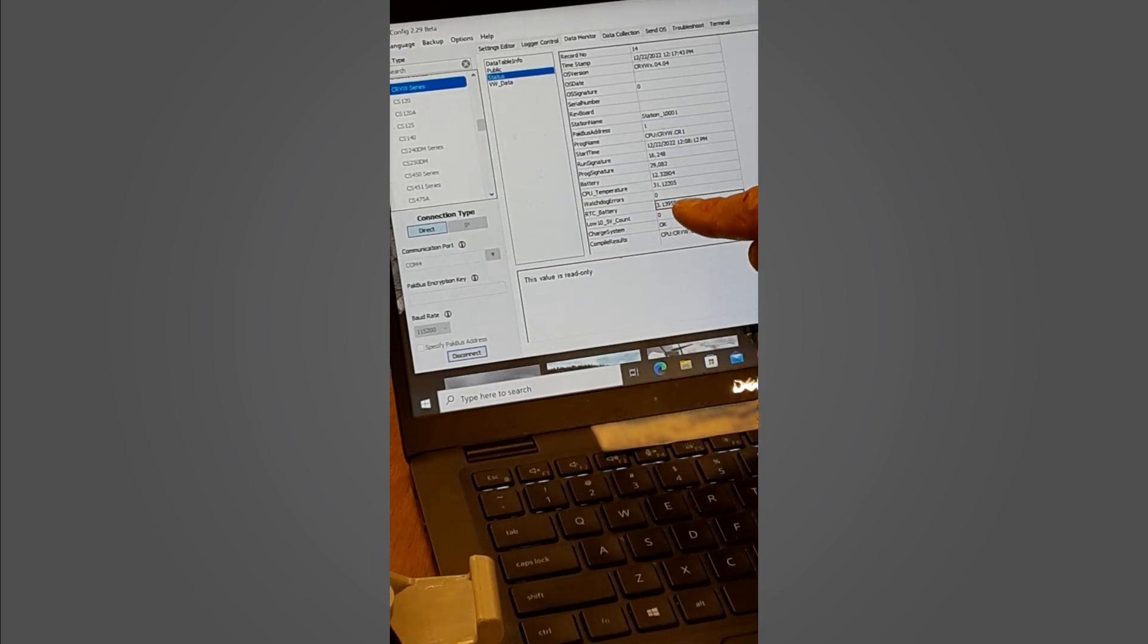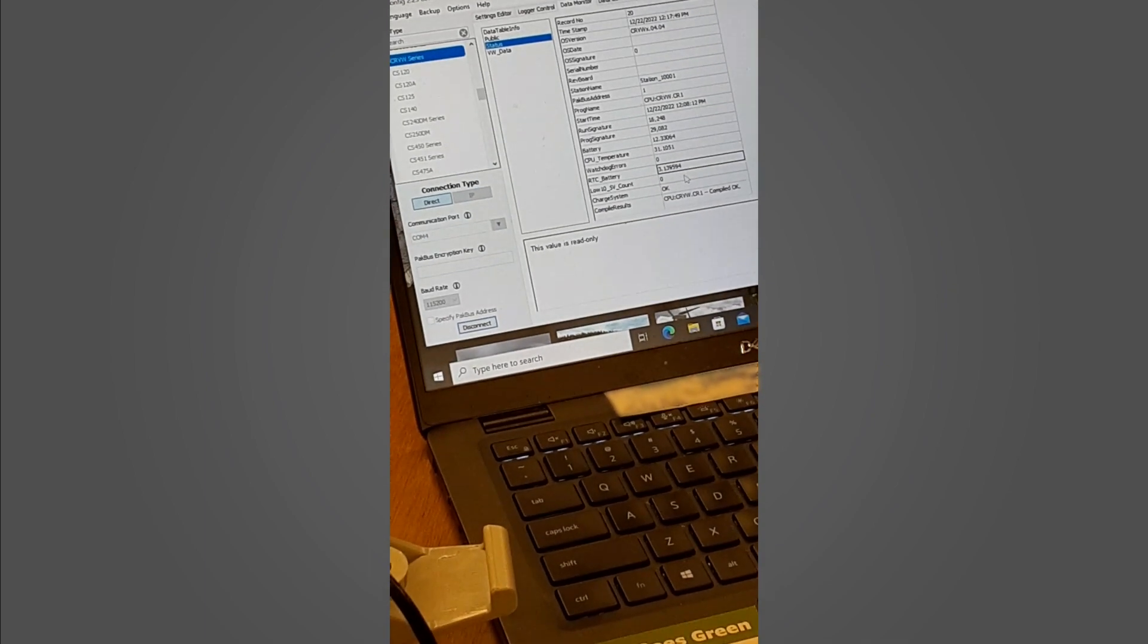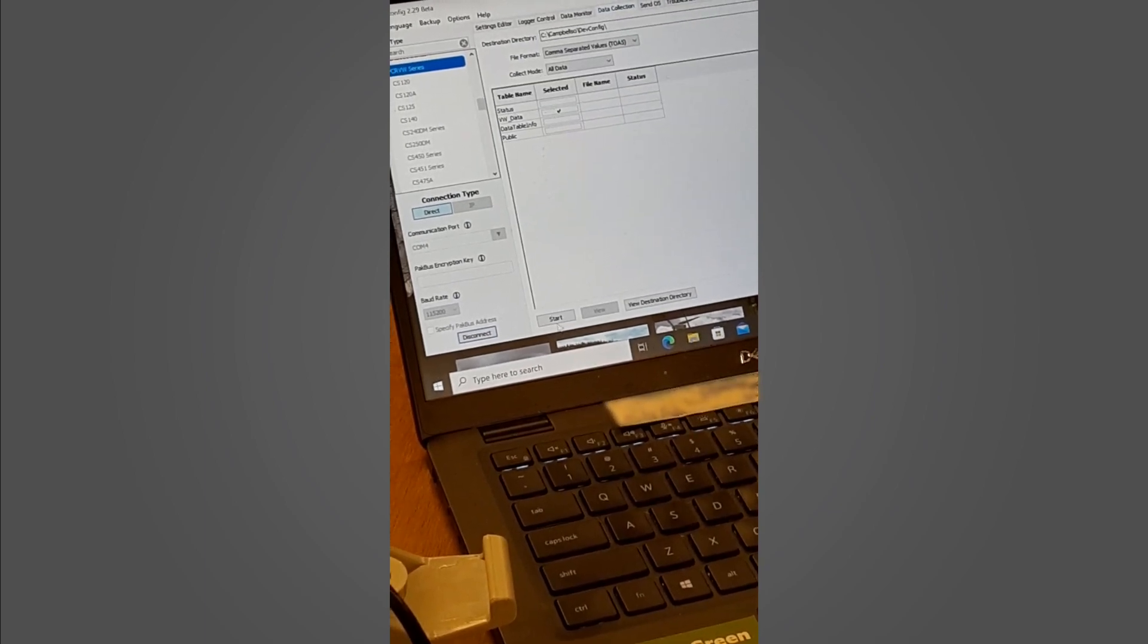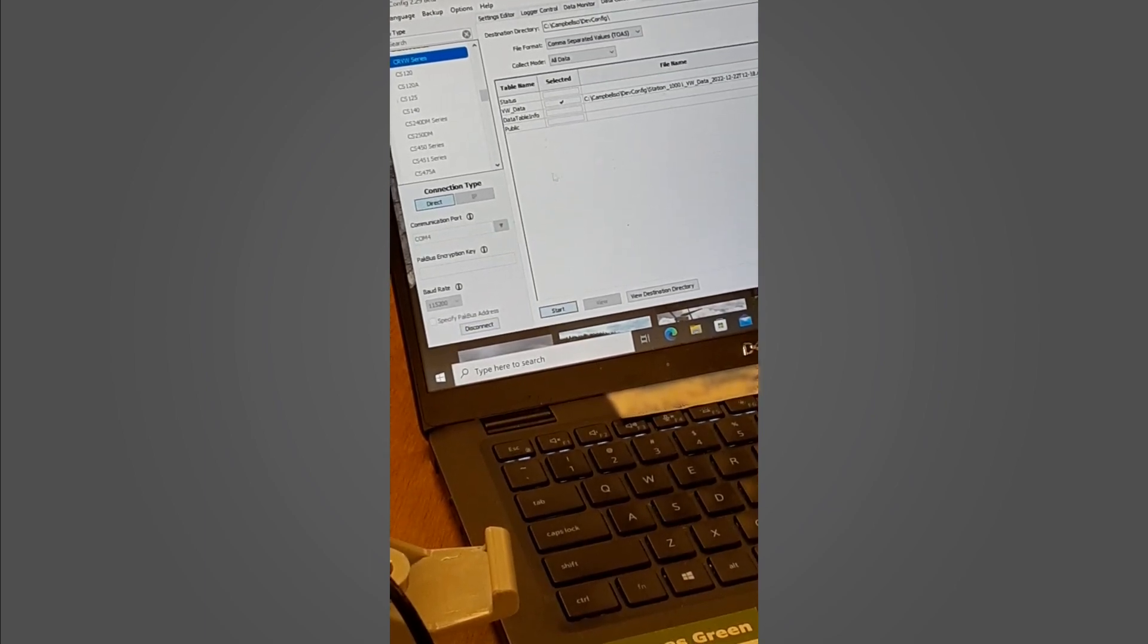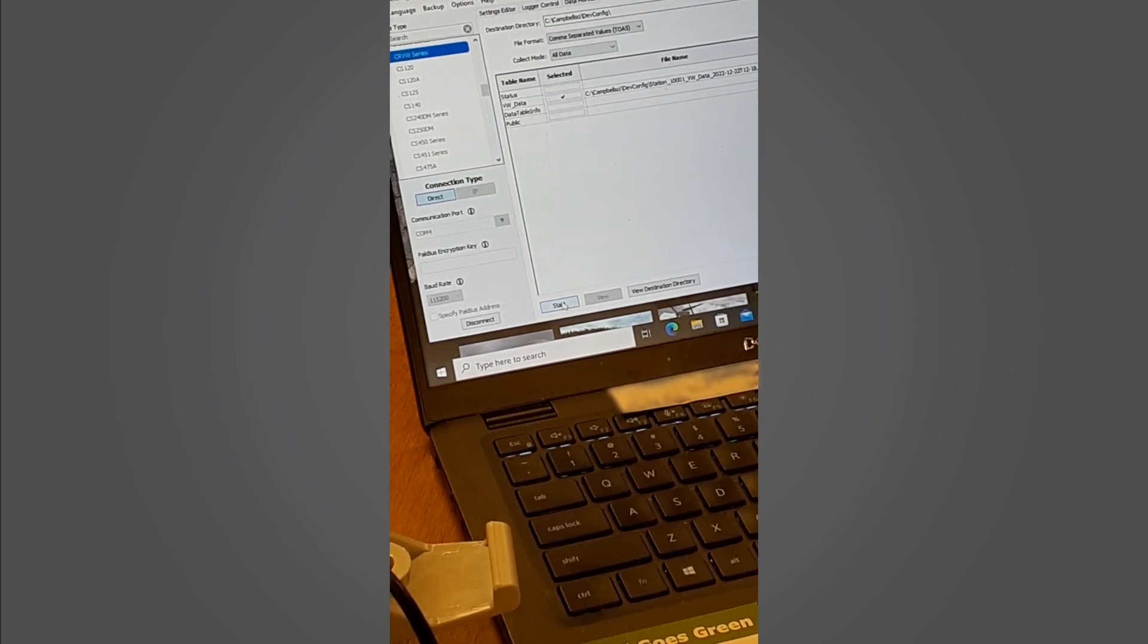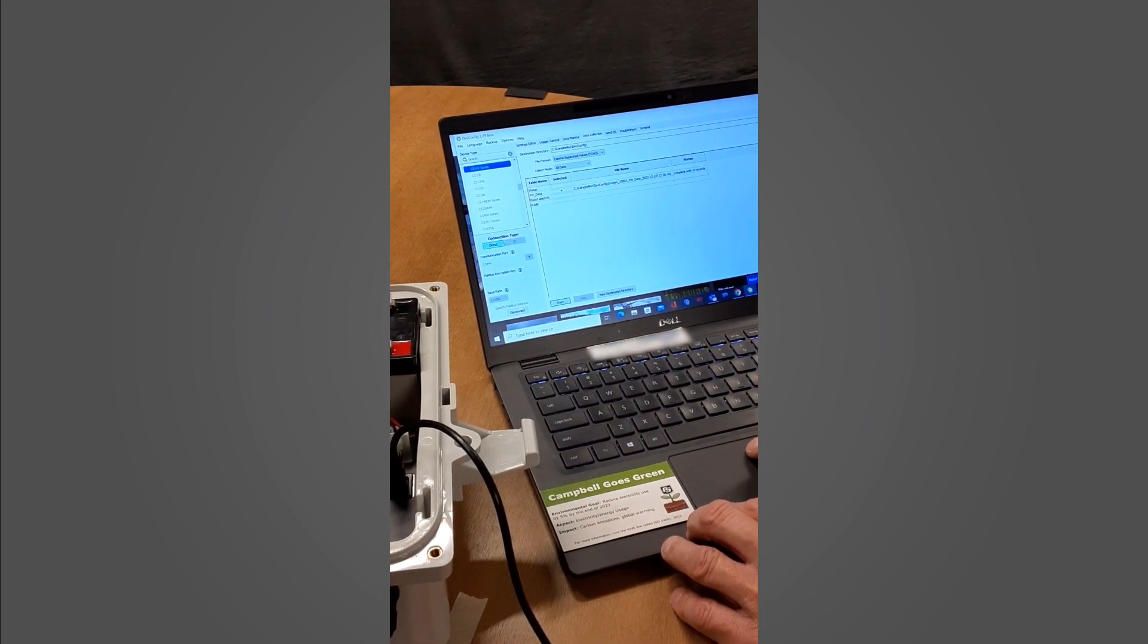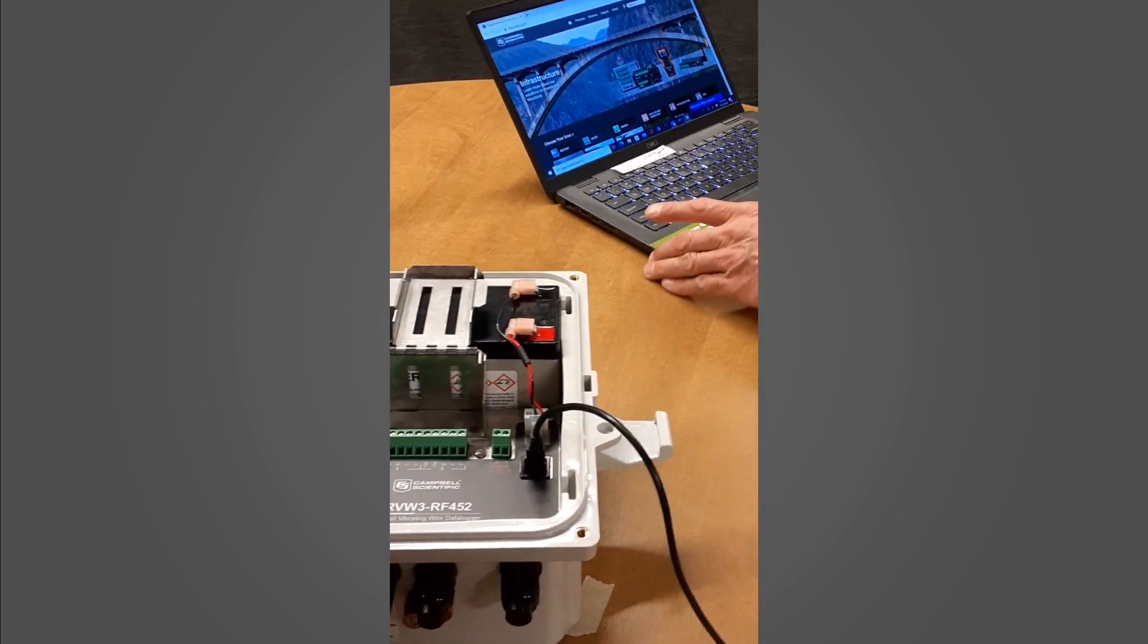This is a new battery but we will show you how to replace it and what you must do when you replace the battery. While this battery only keeps the real-time clock alive, it's always a good idea to collect data beforehand. We're going to collect all the data from the CRBW3, collecting the vibrating wire data. We've only been running this program for a short time with only 13 records, but your data files might be substantially bigger. Now that we've collected data we can go to the physical replacement of the lithium battery.